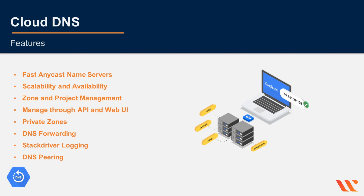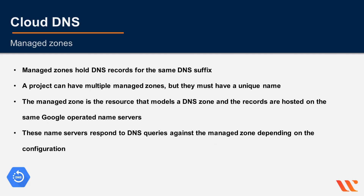DNS peering provides a second method of sharing DNS data. All or a portion of the DNS namespace can be configured to be sent from one network to another.